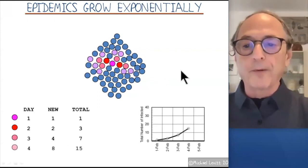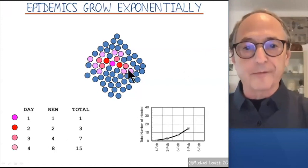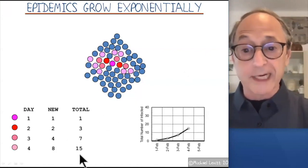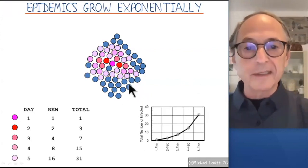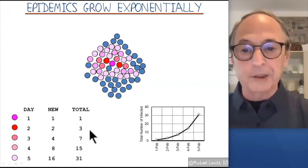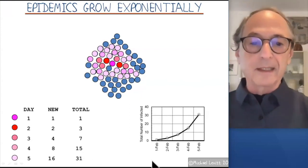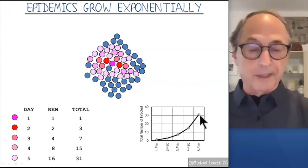On day four, each of these four infect two more. So we have eight altogether and 15 in total. And then day five, we now have 16 new cases, these light pink cases around the edge and 31 in total. Now, this growth is in fact exponential.